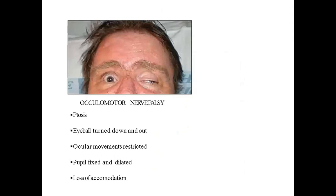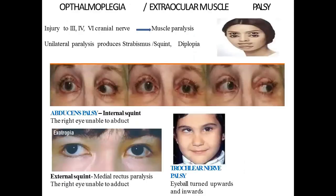Oculomotor nerve (CN III) palsy: ptosis, eyeball turned down and out, ocular movements restricted, pupil fixed and dilated, loss of accommodation. Injury to CN III, IV, or VI leads to muscle paralysis; unilateral paralysis produces strabismus (squint) and diplopia. In diplopia, the patient sees double. Abducens palsy causes internal squint (esotropia) due to medial rectus overaction, while lateral rectus paralysis means the eye is unable to abduct.